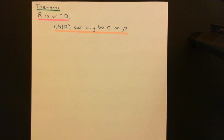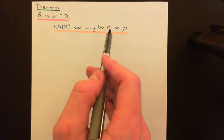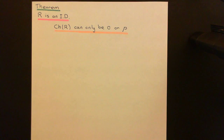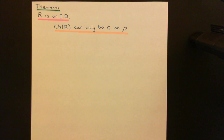The prime numbers are 2, 3, 5, 7, 11, 13, 17, et cetera. These are the only two options for the characteristic of an integral domain: it can either be zero, or it can be a prime natural number. It cannot be a composite natural number, which splits into a product A times B where neither A nor B equals one.